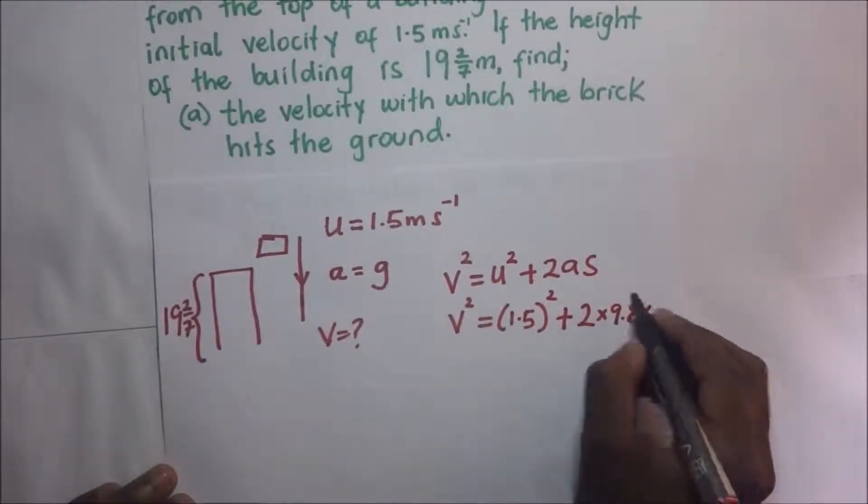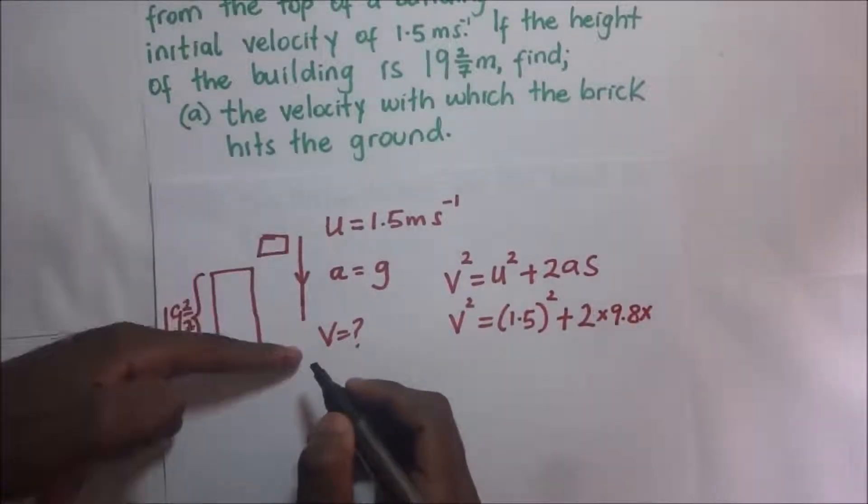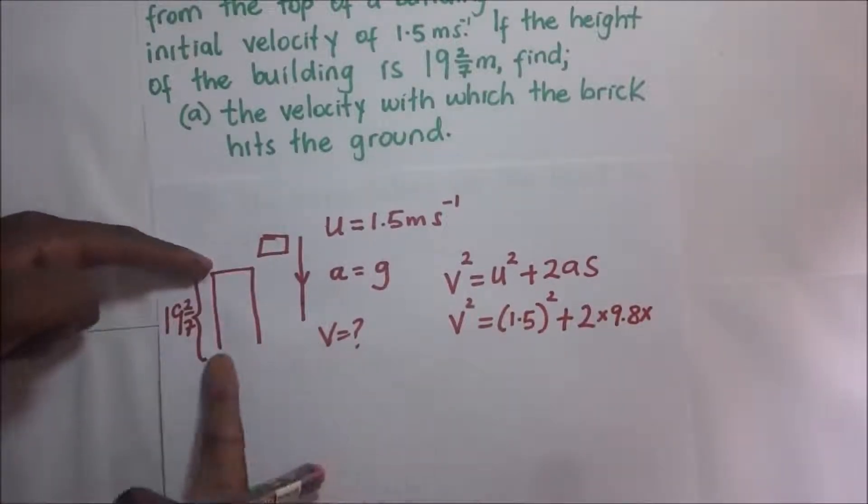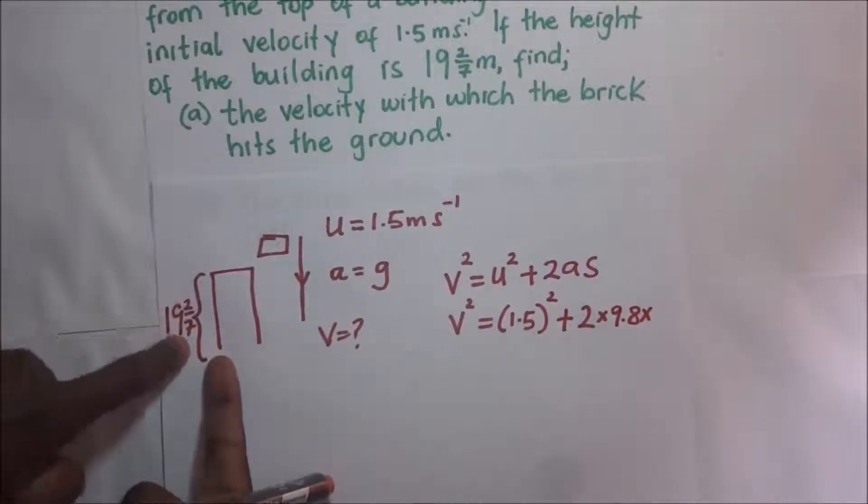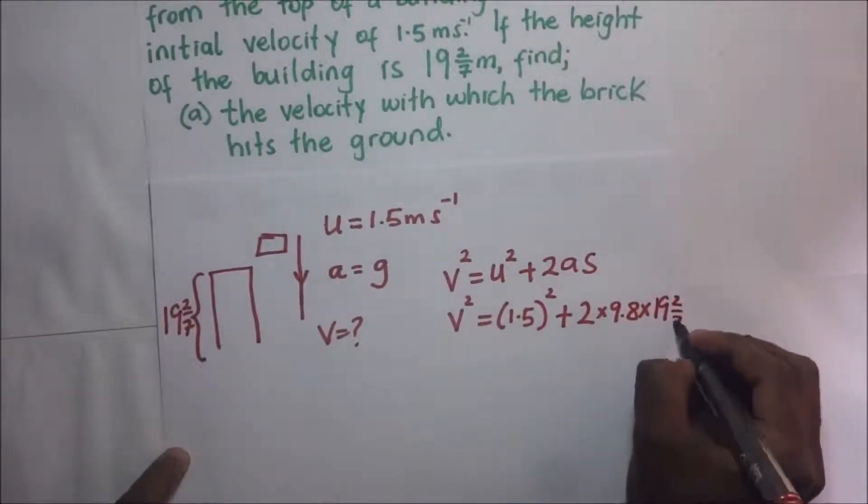2 times acceleration. We said in this video acceleration due to gravity will be 9.8. So it's going to be 9.8 times the displacement. The displacement as it's moving from the top of the building, the height of the building is 19 2/7 meters. So it's going to be 19 2/7 meters.